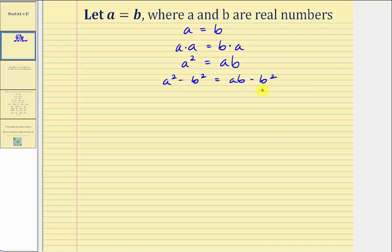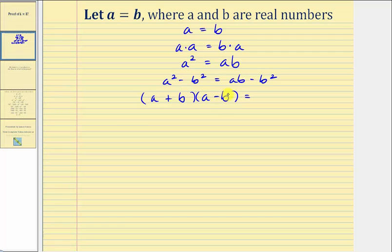Now we're going to factor both sides of the equation. Notice that A squared minus B squared is a difference of squares, so it factors into two binomial factors: the quantity A plus B times the quantity A minus B. On the right side, the greatest common factor is B, so we factor B out to get B times the quantity A minus B.